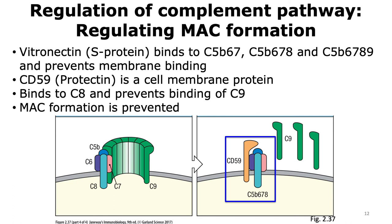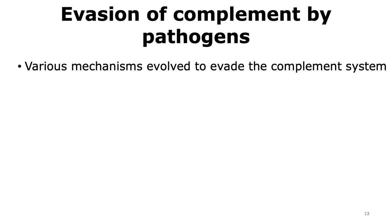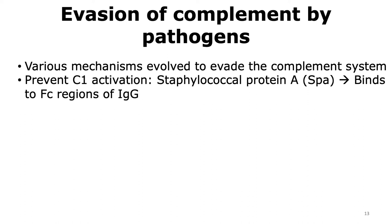Since the membrane attack complex formation is prevented, the host cell will not undergo cell death. Just as the host has evolved mechanisms to protect itself from complement activation, pathogens have also evolved mechanisms to evade the complement system. One such way is by preventing the activation of C1, which triggers the classical pathway. An example is staphylococcal protein A, which is able to bind to portions of antibodies that bind to C1. By not allowing the antibodies bound to the pathogen to bind to C1, the classical pathway is not activated and thus the pathogen is protected.